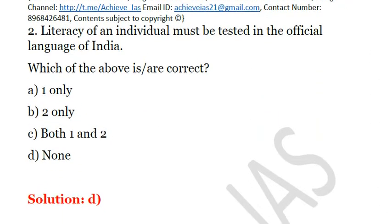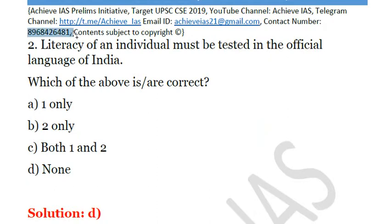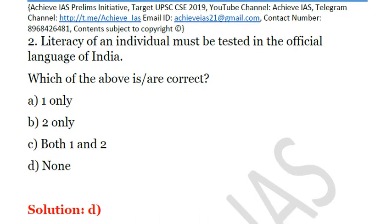If you want to get the explanations of all the questions, you can contact us on our email ID: achieveyes21@gmail.com, or at our contact number: 8968-426481. There will be a minimum cost associated with the explanation PDFs, but it has been kept as low as possible for your affordability as well as for our motivation.